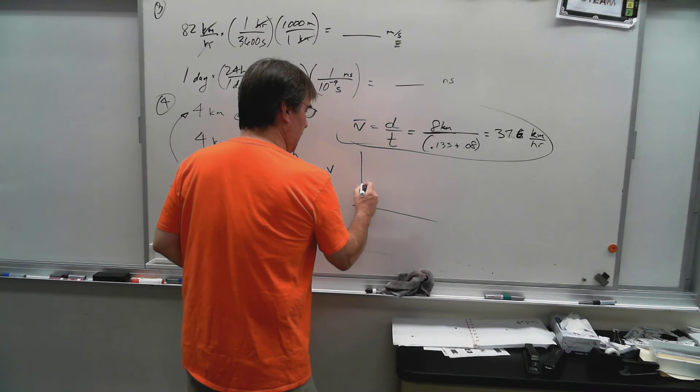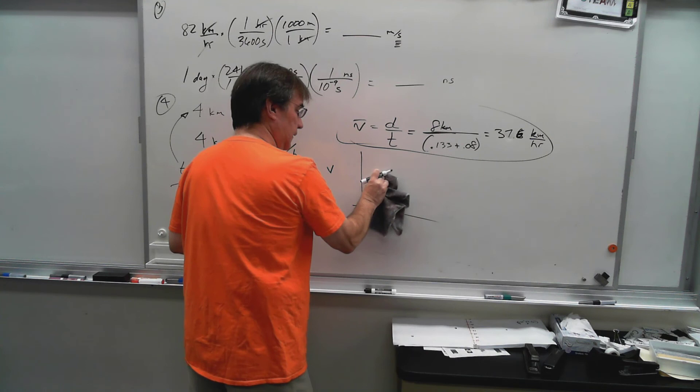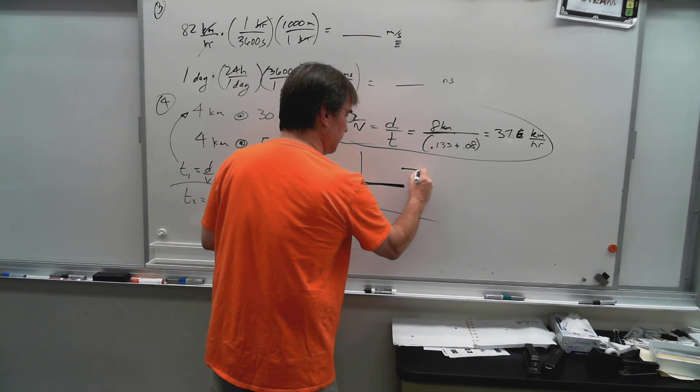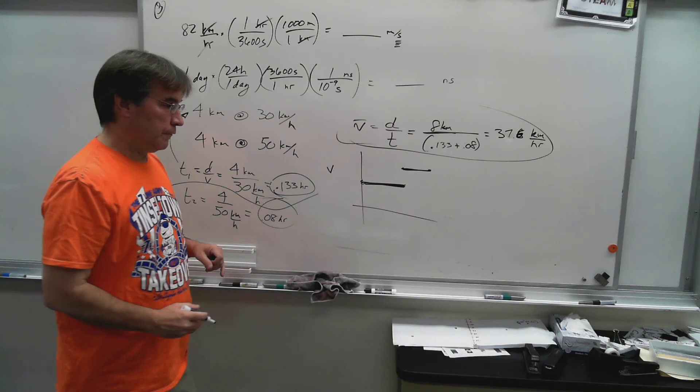I need you to think about what the velocity time graph looks like for this. It's not, oh you started here and then you went up here like this. This is, you spend some time doing that speed and you spend a shorter time doing the other speed. That's what this velocity time graph looks like. Yeah, because you spent more time doing this, that's going to drag your average down.